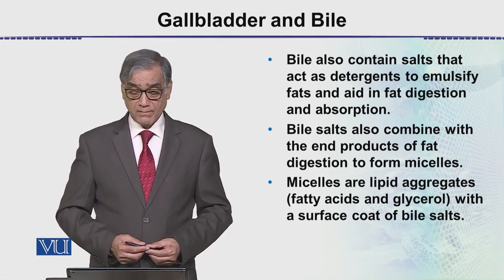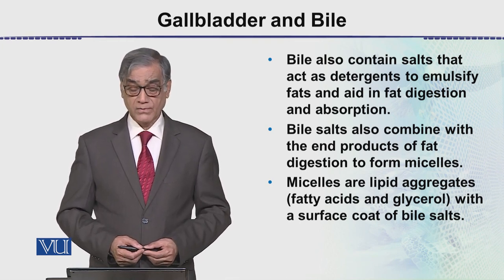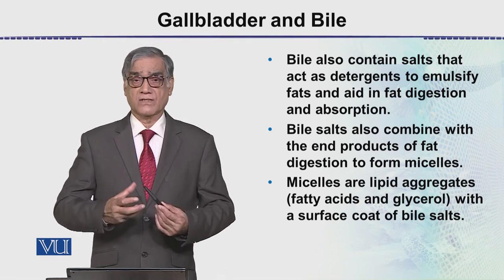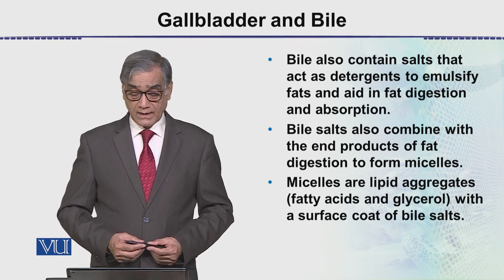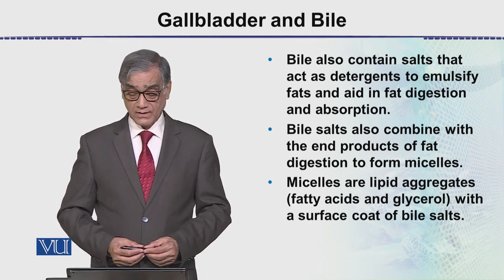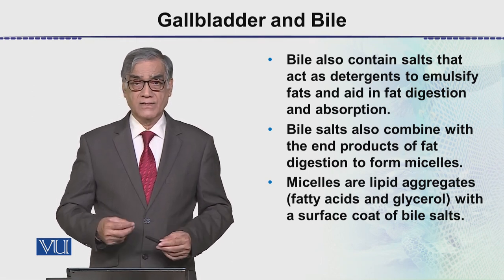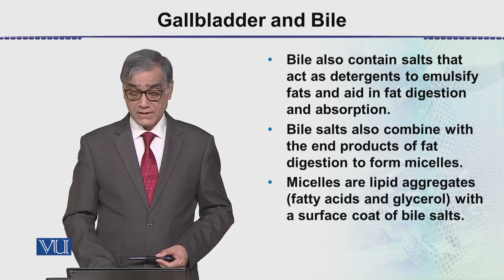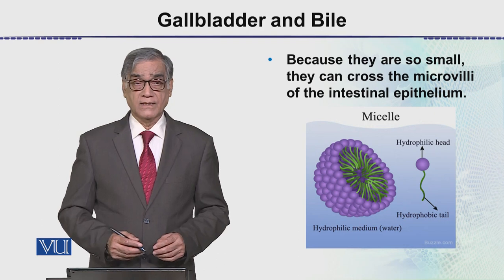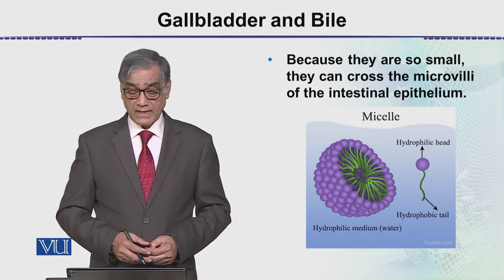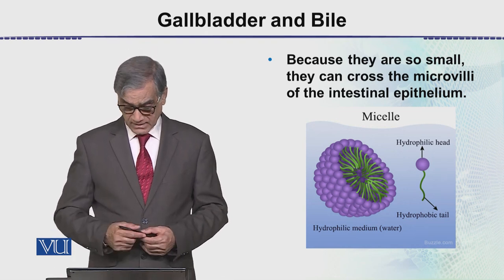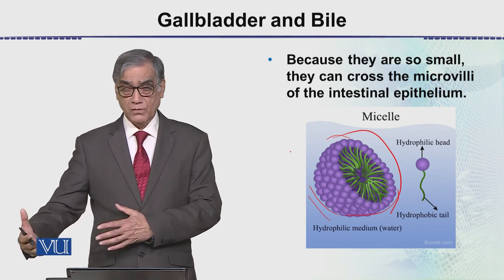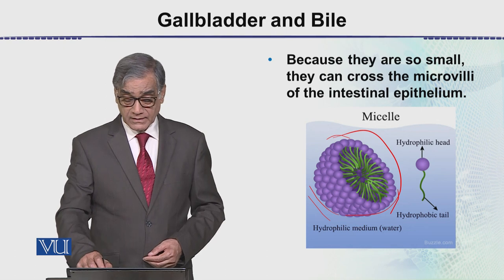Bile salts also combine with the end products of fat digestion, which are fatty acids, to form micelles — a new structure. Micelles are lipid aggregates of fatty acids and glycerol with a surface coat of bile salts. Because they are so small, they are absorbed through the microvilli of the intestinal epithelium. Here one can see the structure: this is a complete micelle, with one part removed to show the internal structure, and these are the fatty acids arranged inside.